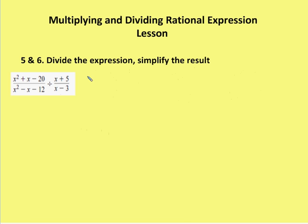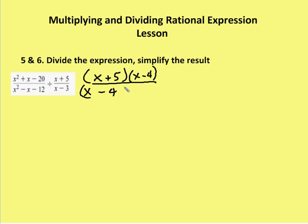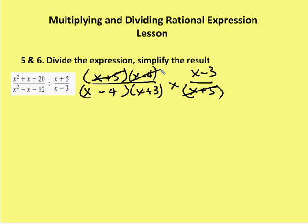For the last problem, another division problem. The first step is to factor the quadratics. I have x plus 5 times x minus 4 over x minus 4 times x plus 3. Dividing means multiplying by the reciprocal, which is x minus 3 over x plus 5. I see common factors x plus 5 in numerator and denominator cancel to 1, and x minus 4 in numerator and denominator cancel. I'm left with x minus 3 over x plus 3.